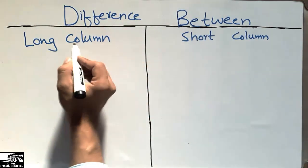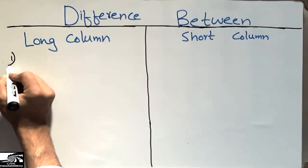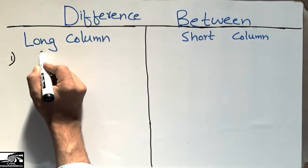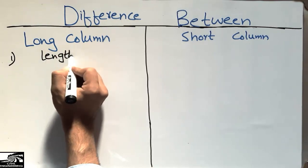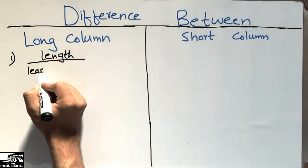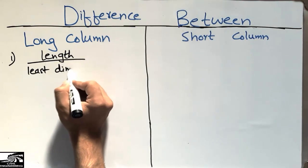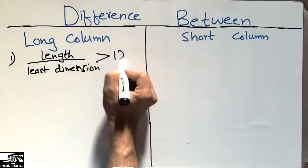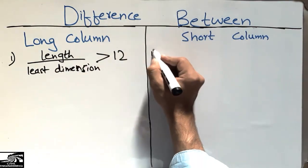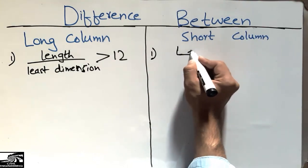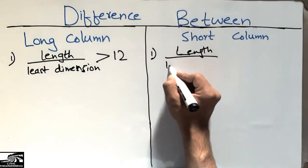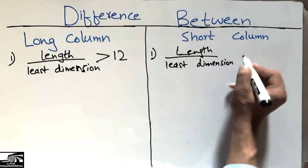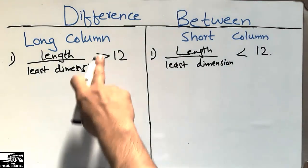The first difference between these two columns is the ratio of the length to the least dimension of the column. For a long column, this ratio should be greater than 12, while in the case of the short column, this ratio of the length to the least dimension should be less than 12.